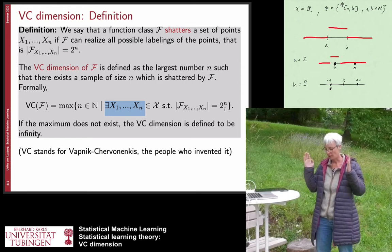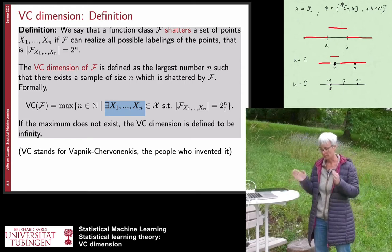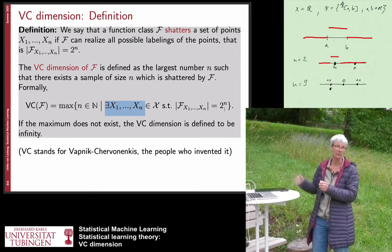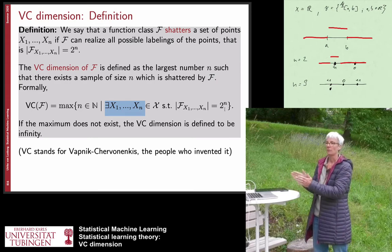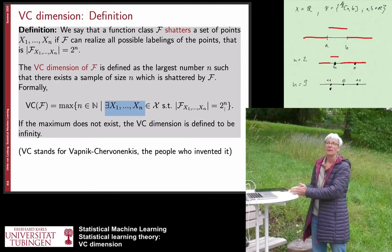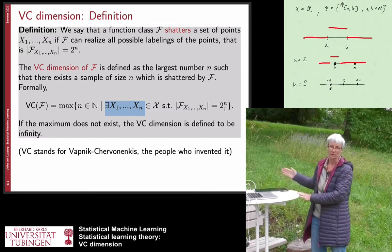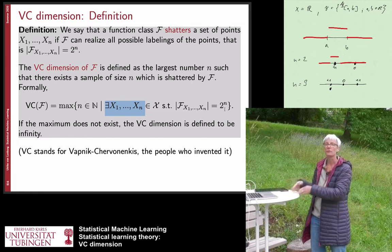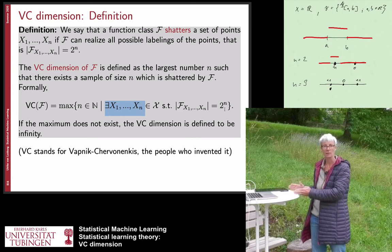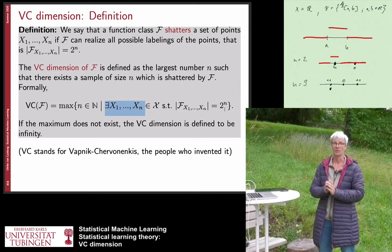The procedure is: check for n=2, does there exist a dataset that can be shattered? Yes — continue. Check for n=3 — if yes, continue; if no, you need to prove that for all datasets they cannot be shattered, and then you have found the VC dimension.